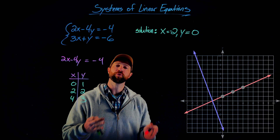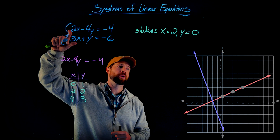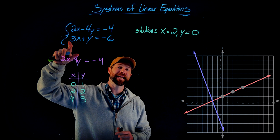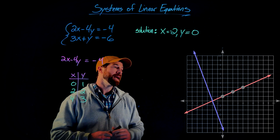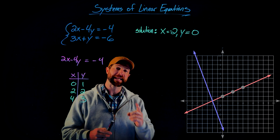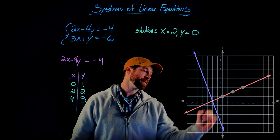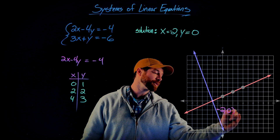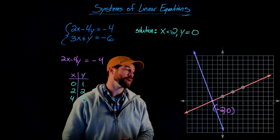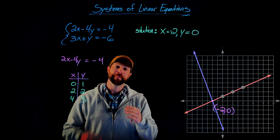Here we have the graphs of both of these two equations. In red, we have 2x minus 4y equals negative 4, and in blue, we have 3x plus y equals negative 6. Because they are lines, it's obvious they can only intersect in one place. That one place they intersect, right here at negative 2 comma 0, or x equals negative 2 and y equals 0, is the one solution that satisfies both of them.